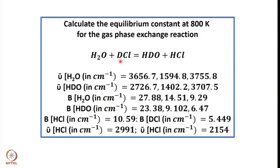DCl is a linear molecule. For each species — DCl, HDO, HCl — you will have translational, rotational, vibrational, and possibly electronic contributions. Similarly for H₂O and HCl. So therefore, in order to solve this problem, you require a lot of data: the vibrational wave numbers, rotational constants, and so on.